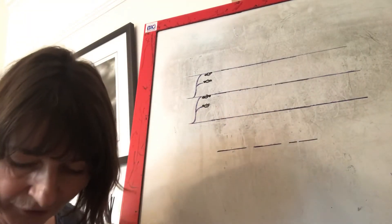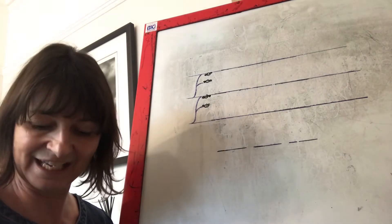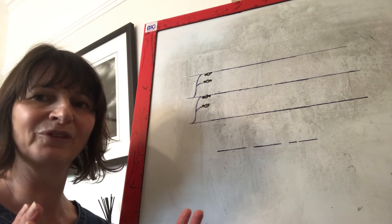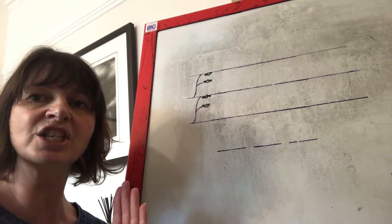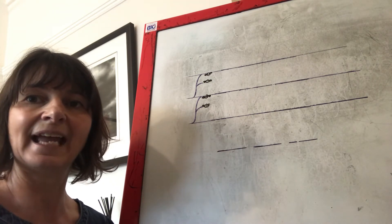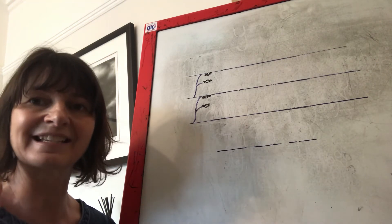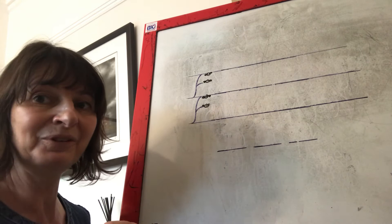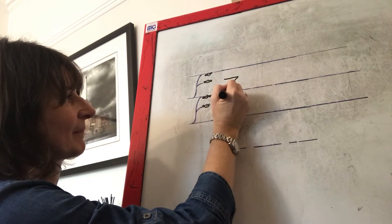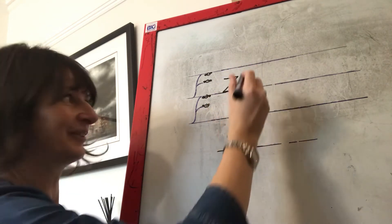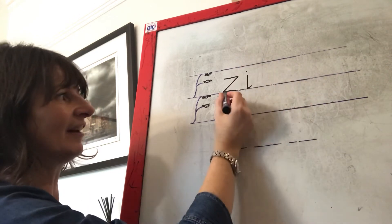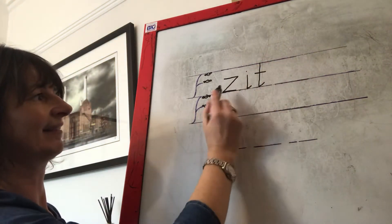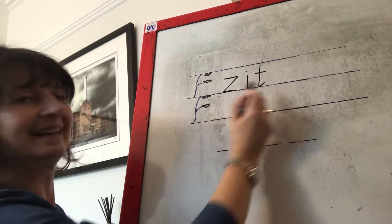The last word we're going to segment and write down is zit. Can you say that? Zit. Show me your robot arms. Let's segment the word: Z-i-t. Zit. First sound — well done, it's our new sound. The middle sound is the i. Well done. And the last sound in zit — you heard it right, it's a t. Let's say the sounds and read the word together: Z-i-t. Zit. Well done.